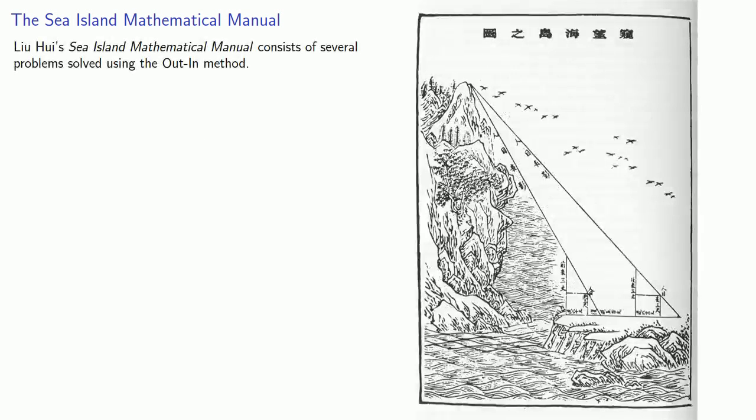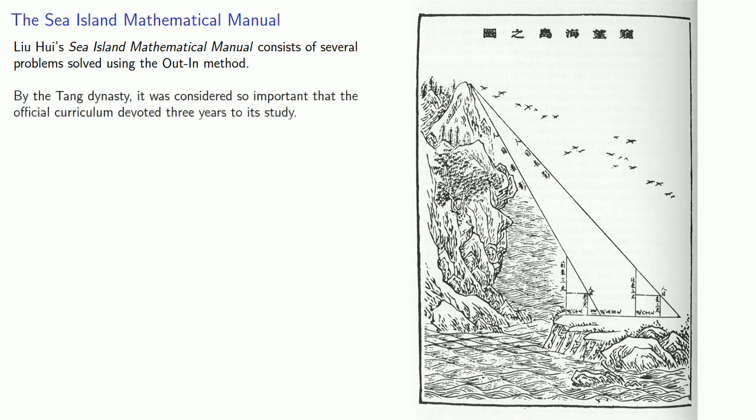Liu Hui's Sea Island Mathematical Manual consists of several problems solved using the Out-In Method. By the Tang Dynasty, this particular work was considered so important that the official curriculum devoted three years to its study, even though it just contained nine problems.